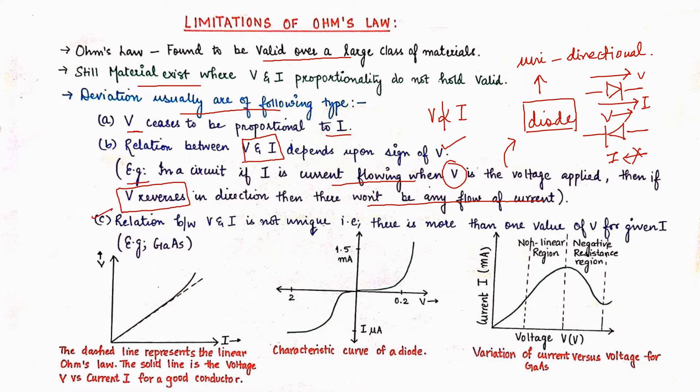Then C is relation between V and I is not unique. There is like more than one value of V for the given I. Same current we can get for various values of voltage provided to the circuit.